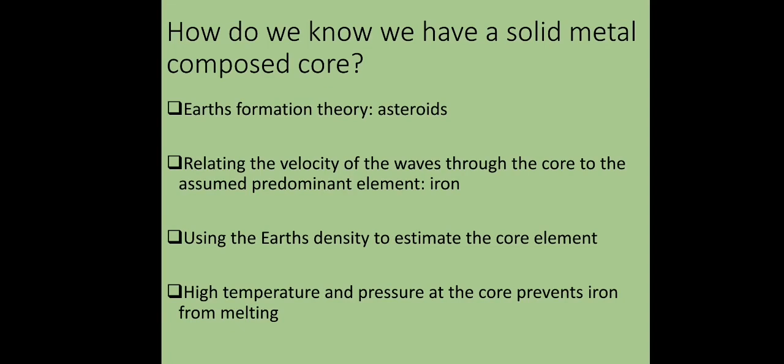How do we know that we have a solid metal composed core? The first one that we look at is the earth's formation theory that the earth formed by asteroids. It is believed that the earth formed by coalescing asteroids which are small rocky objects that orbit the sun. They are mainly composed of iron.